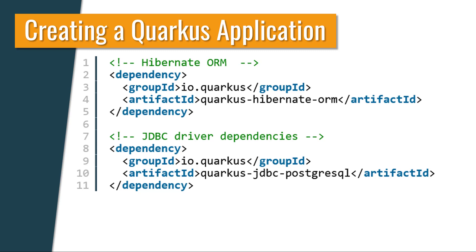To achieve the goals of Quarkus — to support GraalVM as one of its runtimes and support the creation of native images — the team had to impose some technical constraints on the libraries and frameworks you can use with it. Quite often, this makes it impossible to use the standard version of these frameworks. But don't worry, a long list of the most popular Java frameworks already offer compatible versions and you only need to reference the right artifact.